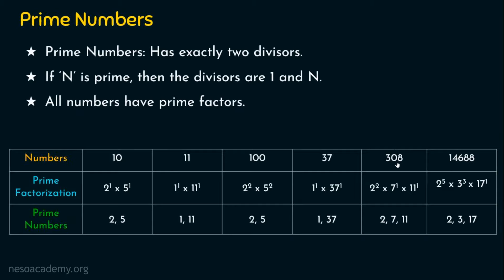Coming to 308, it can be written as 2 power 2 × 7 power 1 × 11 power 1. The prime numbers involved here are 2, 7, and 11. And for the number 14,688, it can be written as 2 power 5 × 3 power 3 × 17 power 1, where 2, 3, and 17 are all prime numbers. So from these examples, any number will have prime factors.